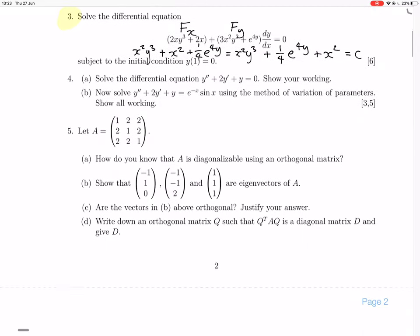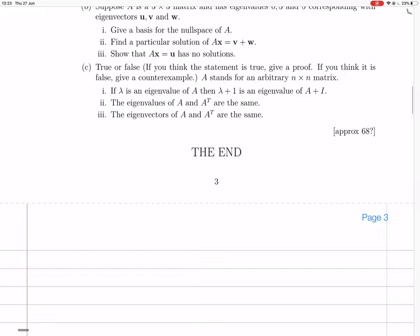Okay. So let's actually do this. Write it down. So it's question 3. So the equation they gave us was... it was 2xy³ + 2x and the F_y was 3x²y² + e^(4y).